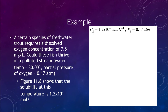Let's look at a second example involving freshwater trout. They require an oxygen concentration of 7.5 mg/L. We want to see if they could survive in a polluted stream at 30°C with a partial pressure of oxygen at 0.17 atm. From figure 11.8, the solubility of oxygen at this temperature is 1.2 × 10⁻³ mol/L at 1 atmosphere.